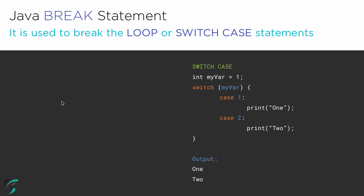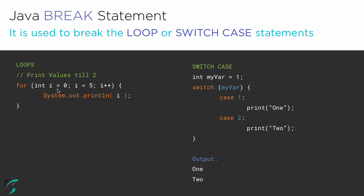The same thing happens in case of loops as well. Suppose we have to print all the values till 2. Here is our loop: int i equal to 0, i smaller than 5, i plus plus, and we are simply printing the value of the counter i. So in the output we get 0, 1, 2, 3 and 4 — that is 0 to 4. But our question is, how do we print values only till 2 without decreasing this upper limit of 5? In this case, the break statement plays a key role.